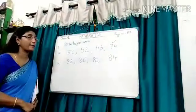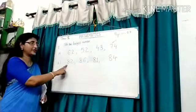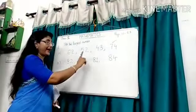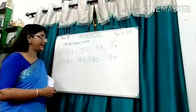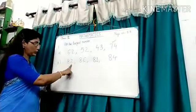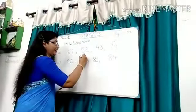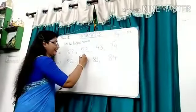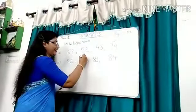Another example. Here the numbers are 82, 86, 81 and 84. All numbers are two digit numbers, so see the tens place first. Here the numbers in tens place are 8, 8, 8 and 8 — all are same. So, see the ones place: 2, 6, 1 and 4. 6 is the largest number in all numbers. So, 86 is the largest number. Tick the largest number, 86.